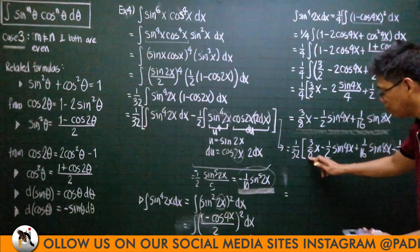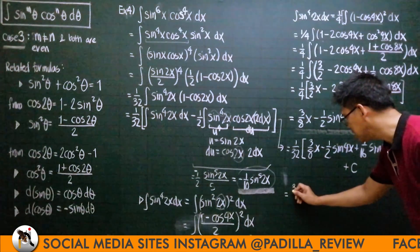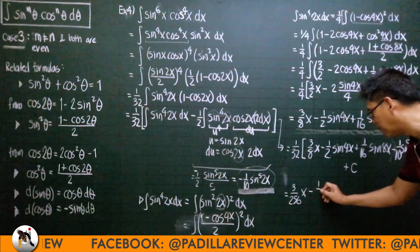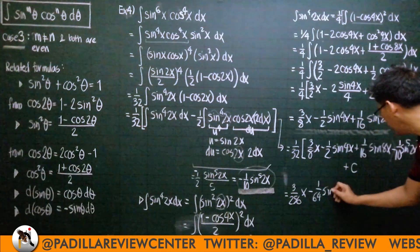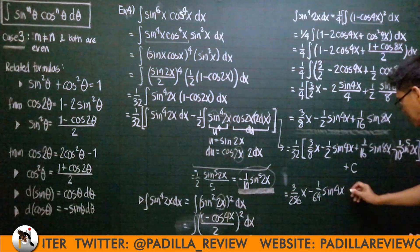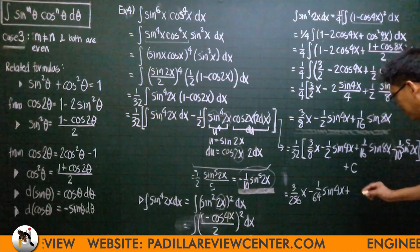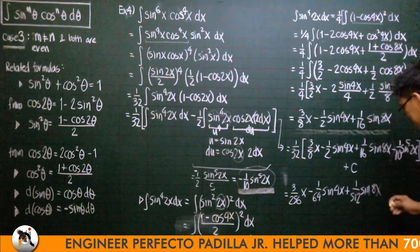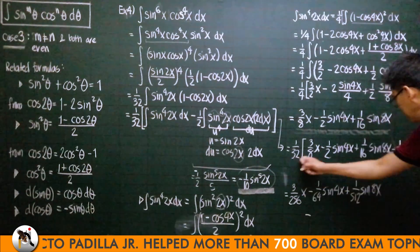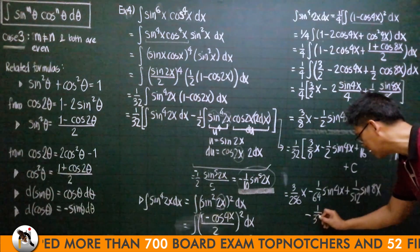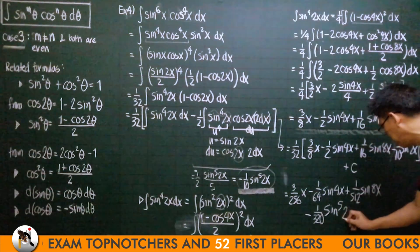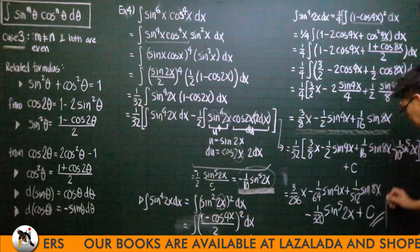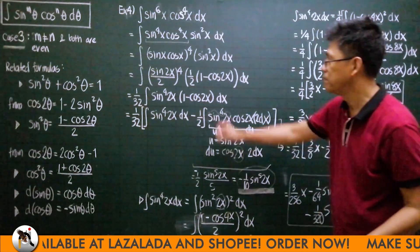Bringing in the 1/32 factor: (1/32)·[(3/8)x − (1/2)sin(4x) + (1/16)sin(8x)] − (1/10)sin⁵(2x). This gives (3/256)x − (1/64)sin(4x) + (1/512)sin(8x) − (1/320)sin⁵(2x) + C. This is the final answer for the integral.